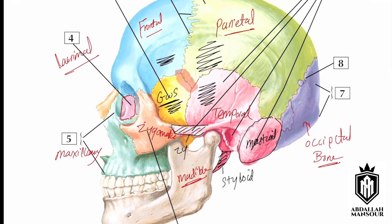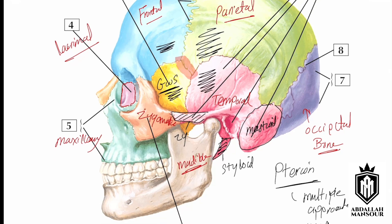The pterion has very important clinical significance. It represents multiple approaches in brain surgery, including the pterional approach to access the anterior circulation of the brain. It is also important because the middle meningeal artery runs on the inner surface of the pterion, and injury to the middle meningeal artery can lead to extradural hematoma.